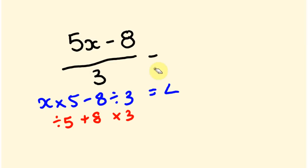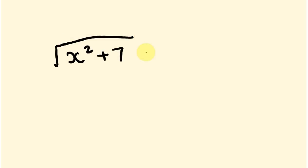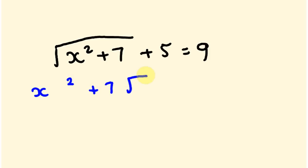This really relies on you knowing the order of operations — the BODMAS thing — which you should know anyway if you're doing these. The next example is: √(x² + 7) + 5 = 9. First, work out which order the operations happen. Starting with x: it's being squared, then we add 7, then we take the square root of that whole amount, then we add 5, and we get 9.